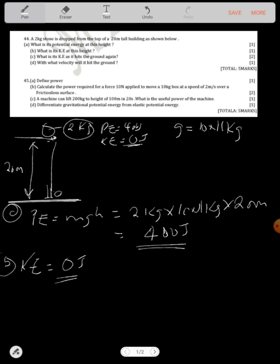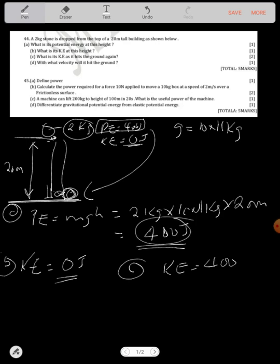What is its kinetic energy as it hits the ground? Now it has come down, now it has hit the ground. What is its kinetic energy? Now the whole potential energy which it had on top there will be converted into kinetic energy at this point. So at C we are saying kinetic energy will just be equal to 400 joules.